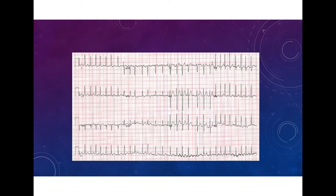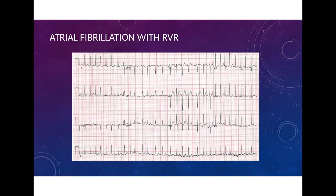Counting 29 QRS complexes across the strip gives a heart rate of about 174 beats per minute. Again, there's no clear distinct atrial activity going on between the T wave and QRS complexes. We'll call this atrial fibrillation with rapid ventricular response, or AFib with RVR.